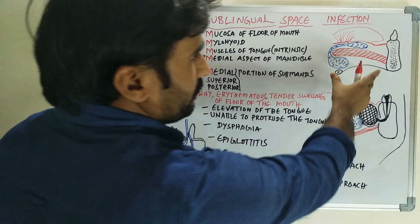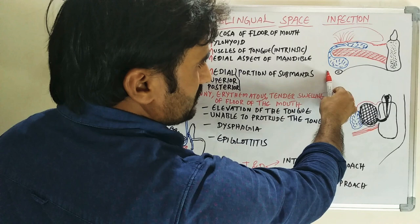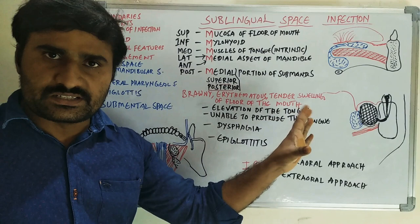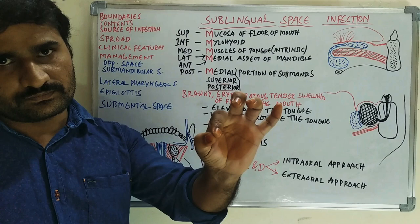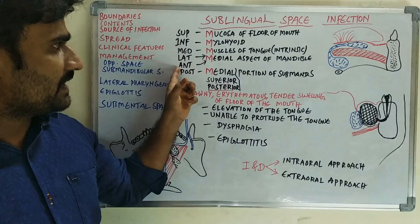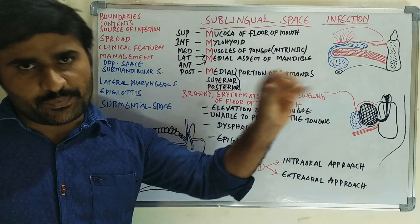The anterior boundary is the mandible, and the posterior boundary is the medial portion of the submandibular gland — also referred to as the superior or posterior portion. To remember the boundaries, just remember the letter M, as every boundary starts with M: superiorly mucosa of the floor of mouth, inferiorly mylohyoid muscle, medially intrinsic muscles of tongue, laterally and anteriorly medial aspect of mandible, posteriorly medial portion of submandibular gland.